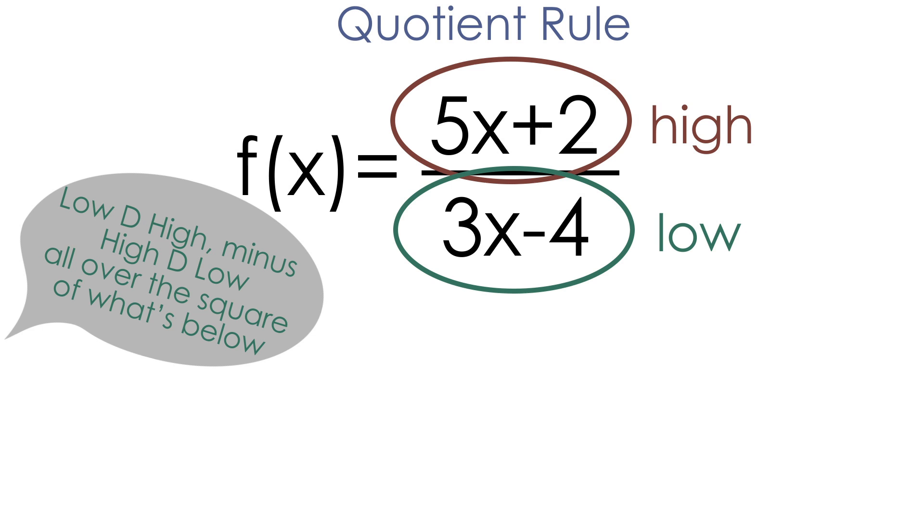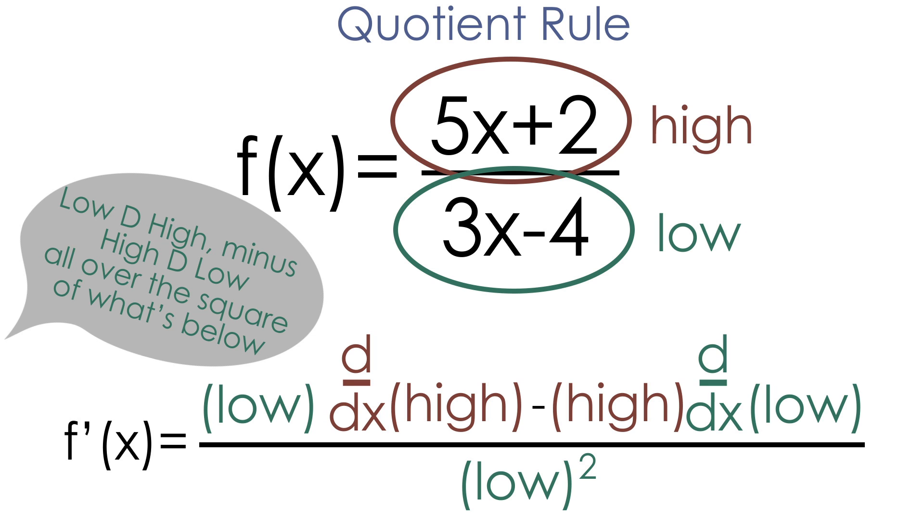And what this is saying is the low times the derivative of the high minus the high times the derivative of the low all over the square of the low. So let's use this formula to take the derivative of our function.